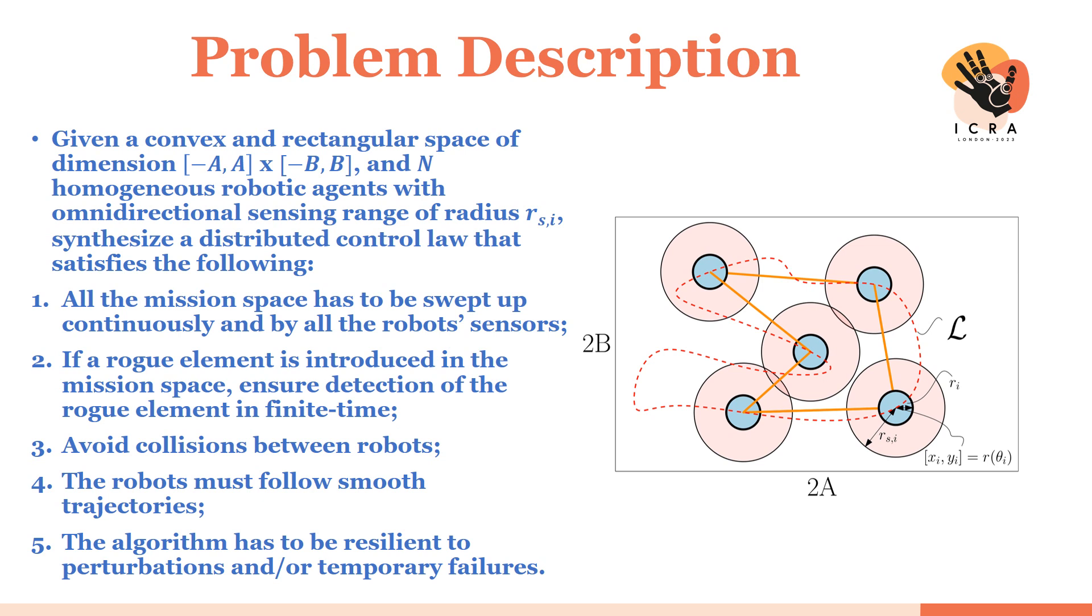We want to avoid collision between robots. The robots have to follow smooth trajectories. And the algorithm has to be resilient to perturbations and or temporary robot failures.